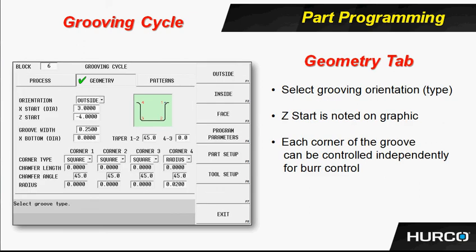Here's the geometry screen. The orientation is just an outside, inside, or face type groove. What is the starting diameter? You want to put the actual diameter where it's going to contact material. If you were cutting on a 3-inch part and put 3 inches and 20 thousandths in there, and then tried to put a 20-thou chamfer on the corner, there would be nothing to cut because it would be thinking it was cutting 20 thousandths above the material. So make sure the diameter is exactly where the tool will contact material.